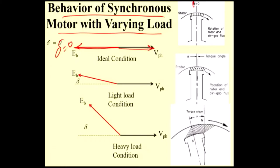Now, you are increasing the load — light load condition, say 10 percentage load. What will happen? Initially, the stator magnetic axis and rotor magnetic axis are in exact synchronism. Because of the increment in load, the rotor tries to come out from synchronism, and that will create some angle called the load angle or torque angle. If you increase the load, the load angle — delta — will increase.